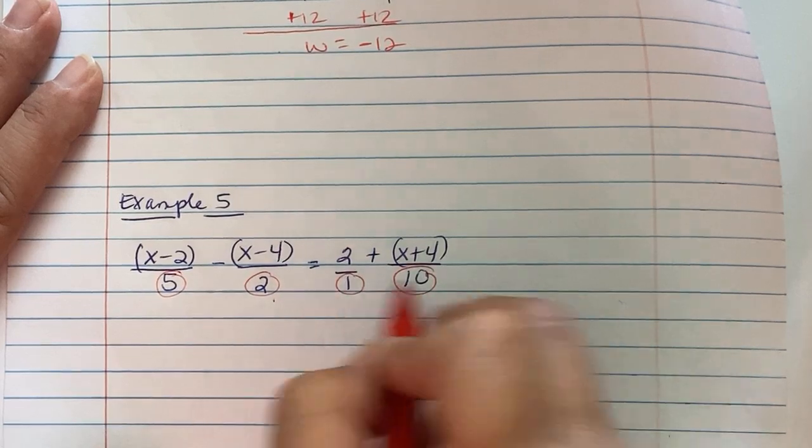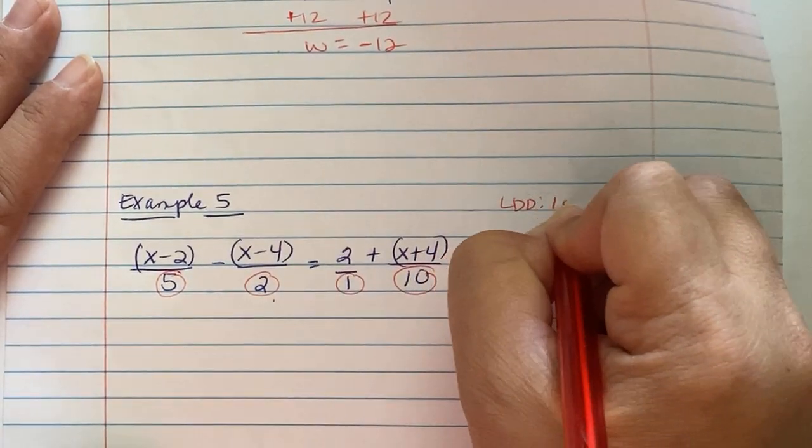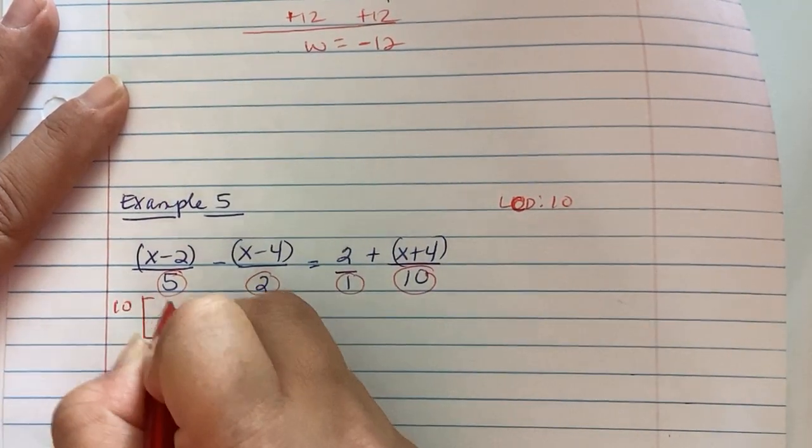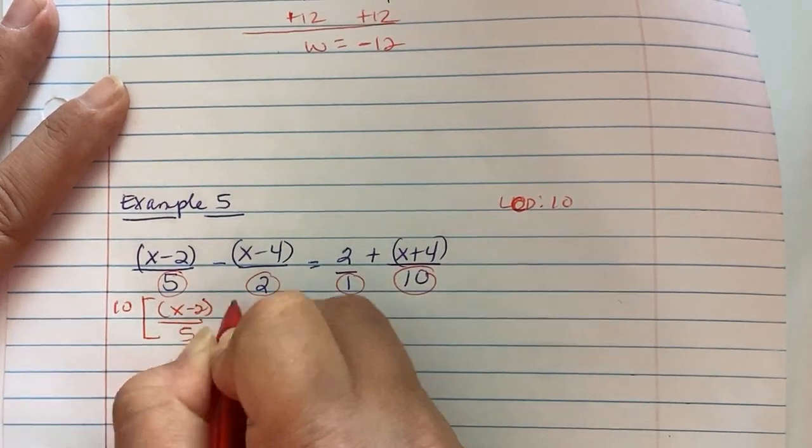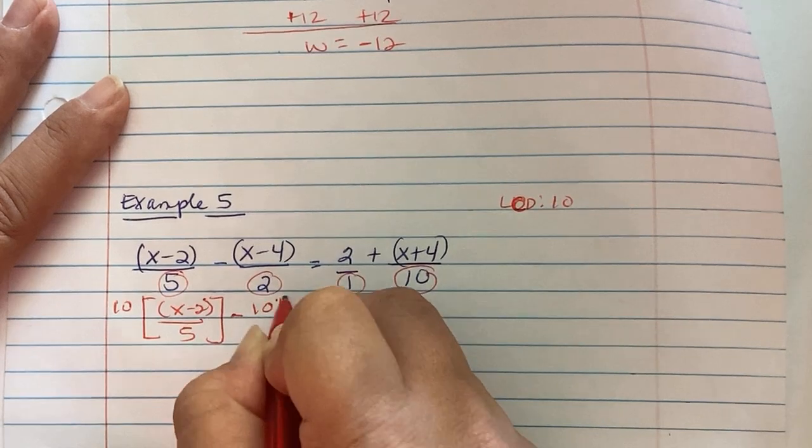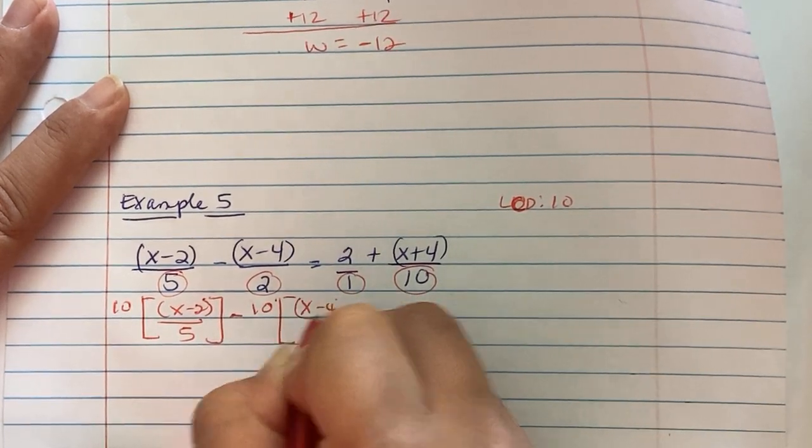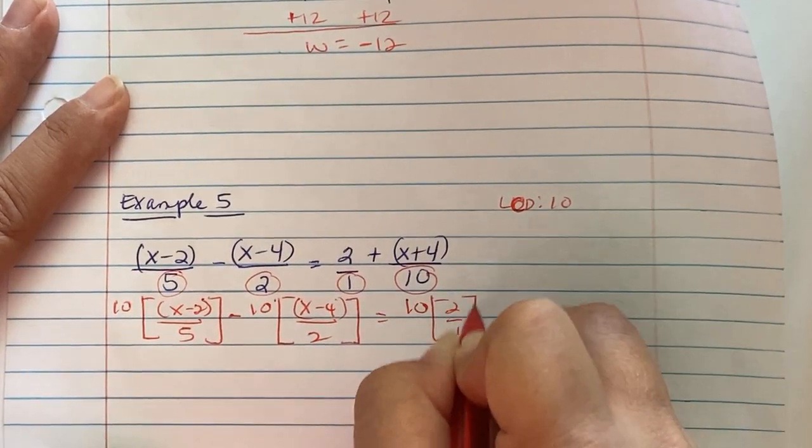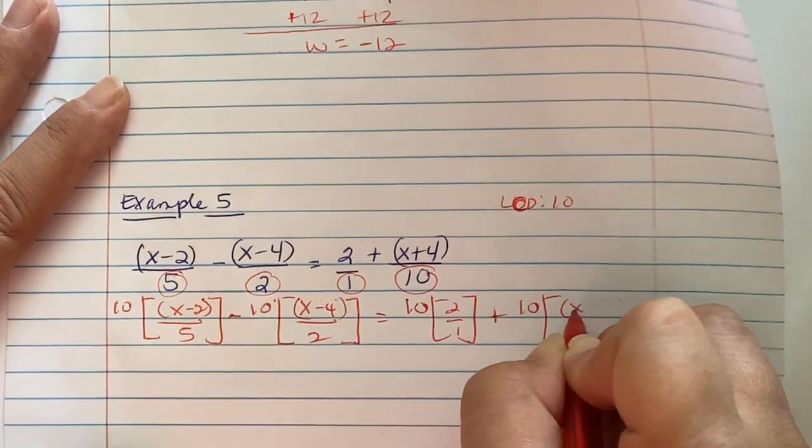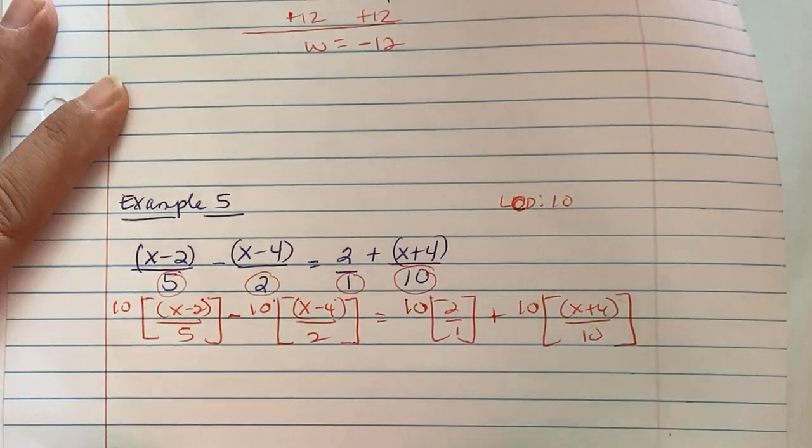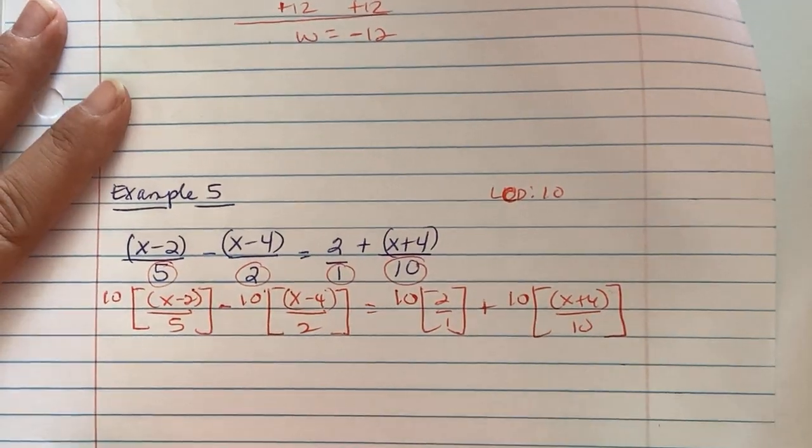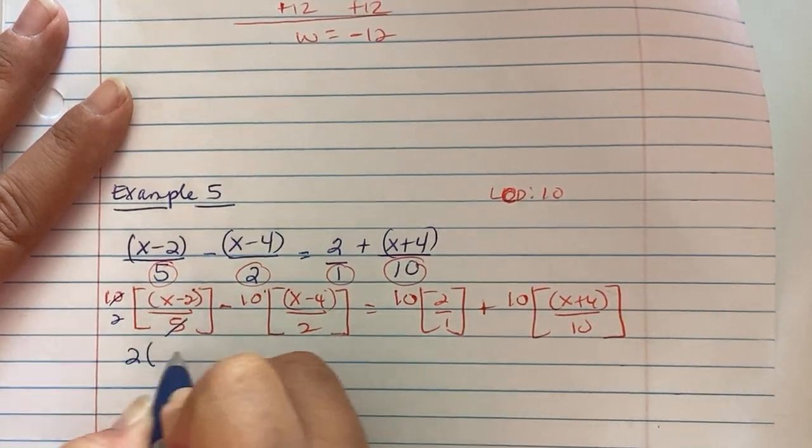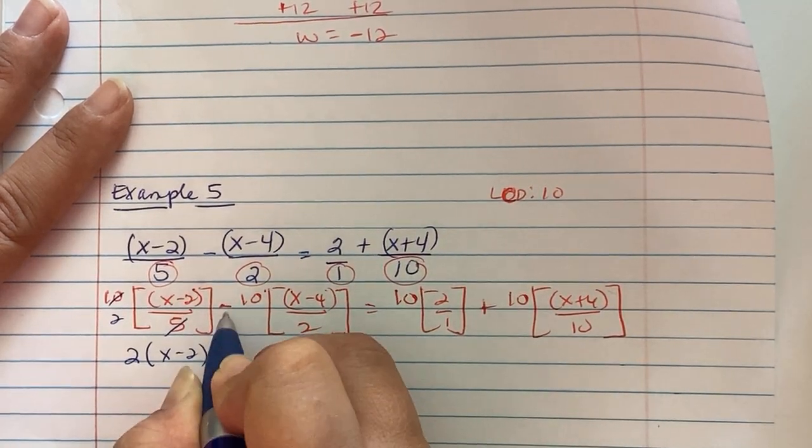Now I'm circling my denominator. I have a 5, a 2, a 1, and a 10. Well, 5 times 2 is 10, and 10 is divisible by 10, so your LCD in this instance is a 10. So you're going to put 10 bracket x minus 2 over 5, 10 bracket x minus 4.